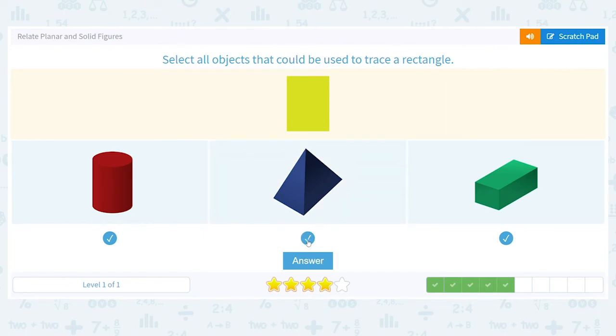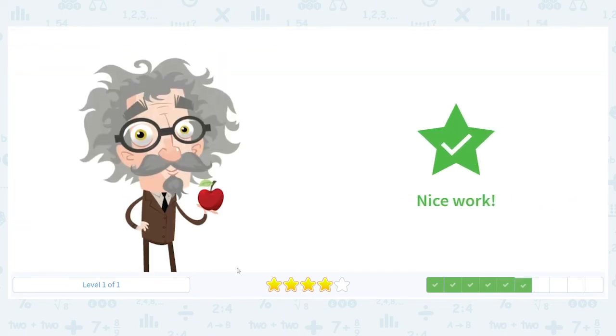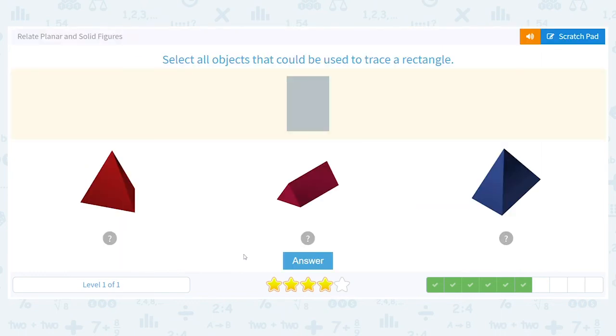So all three of these items can be used to trace a rectangle. Nice job. Next, we need to make a rectangle. Here's a hint. There are only two answers.